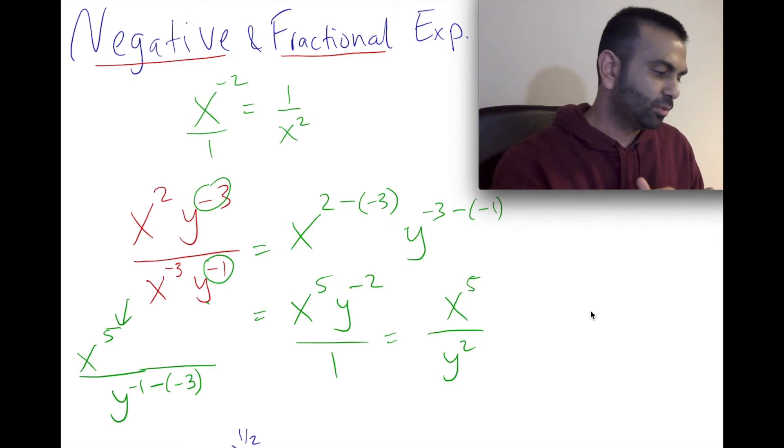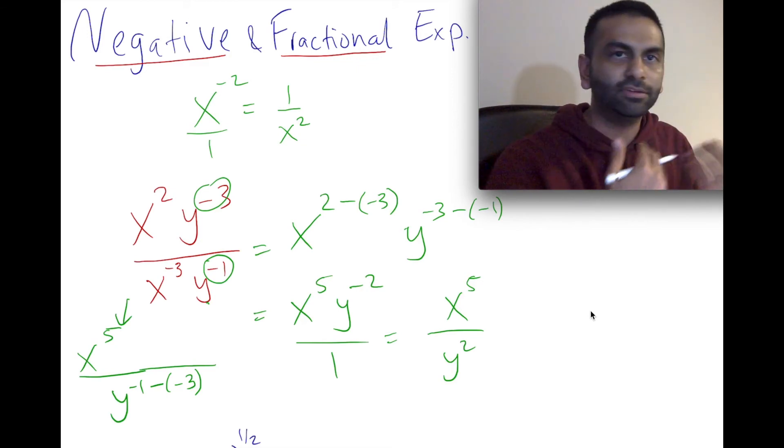You could do it either way. You could pick whichever one is larger, go there, and then subtract the other one. Or you could just divide it out and then switch over any negative ones at the end, if need be.